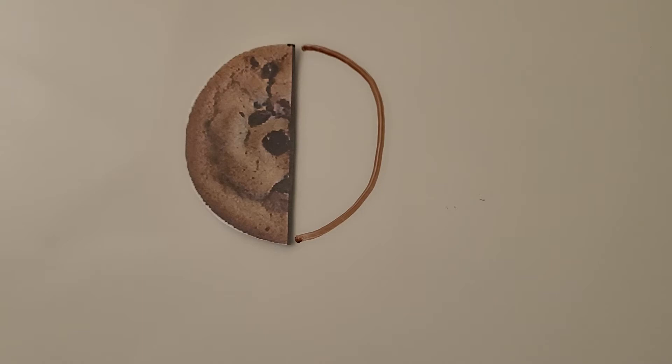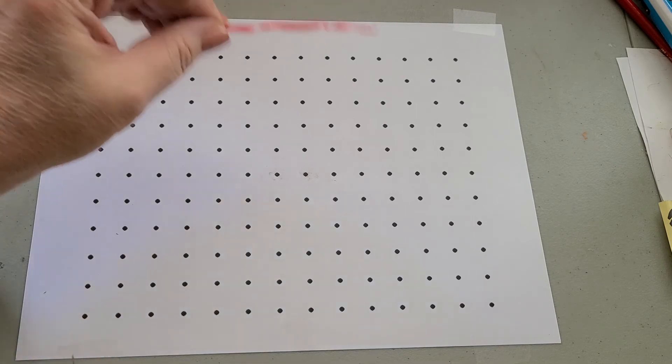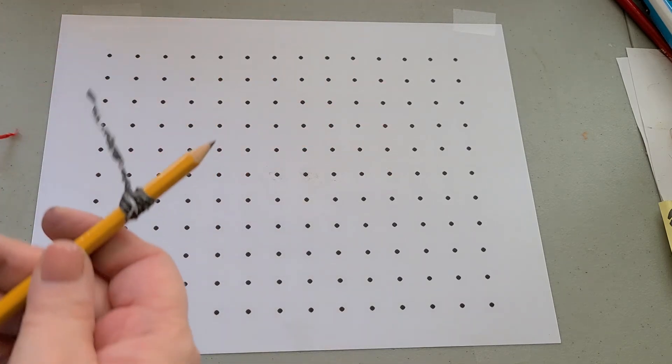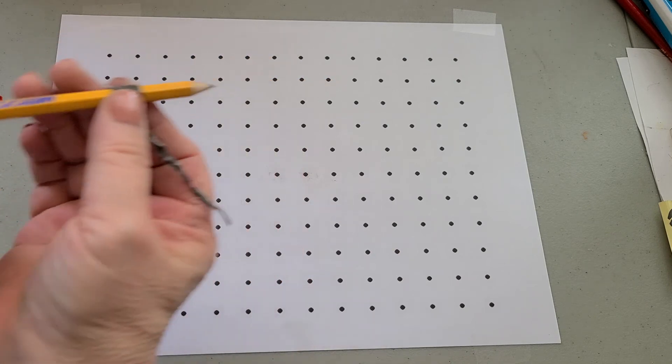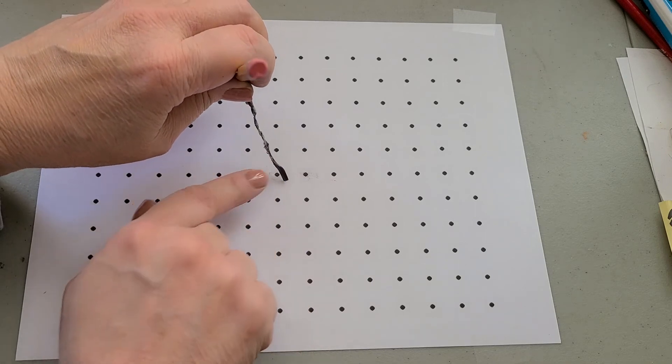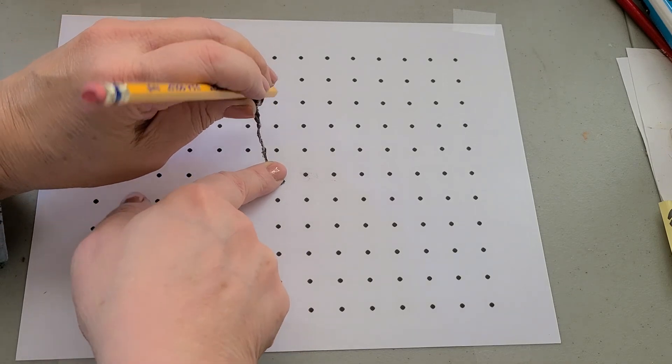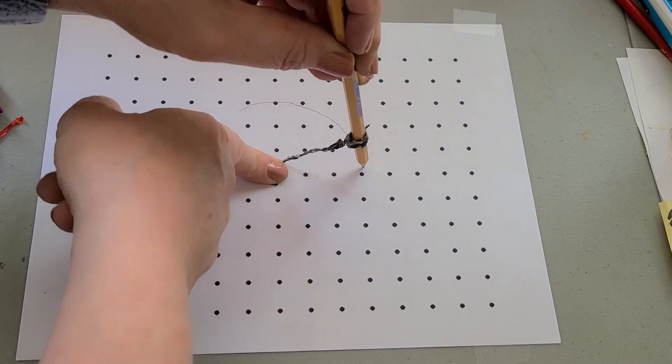Here we have some dot paper. We can take some tie twists from a loaf of bread and tie it around the bottom of a pencil like this. And we can choose a dot and we can hold our finger on that point and we can make a circle by going around.